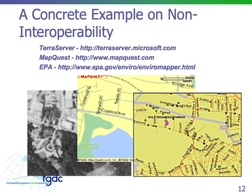Here's a specific example of non-interoperability where we have three different map services — one from TerraServer at Microsoft, one from MapQuest, and one from EPA. They're all basically showing information about the same place, yet they're in three different browser windows, not in the same overlay or projection. I can't put them together to show environmental information with imagery without having it all assembled for me. By adopting standards, we can have a single browser enabled to interact with all three.